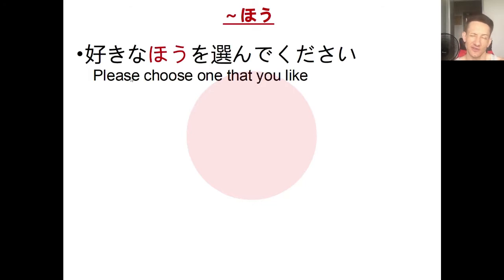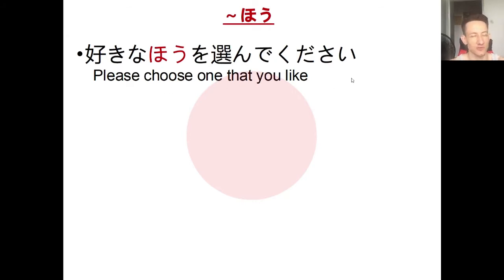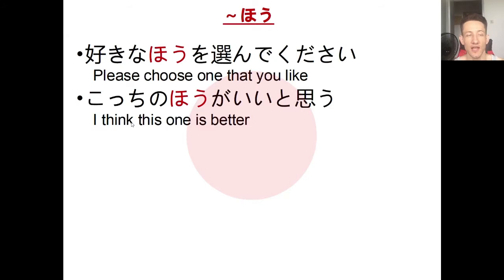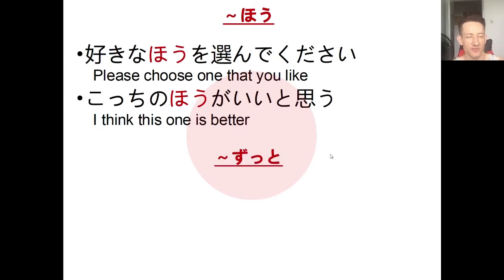Let's look at using ho to express direction or preference. You can say suki na ho wo erande kudasai - 'Please choose the one you like,' imagining multiple choices. You can also say kochira no ho ga ii to omou - 'I think this one is better.' So ho roughly translates to 'one' or 'side,' like kochira no ho ga suki, meaning 'I like this one here, in this direction.'